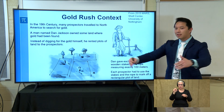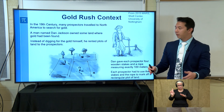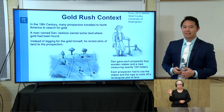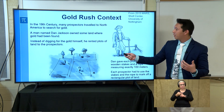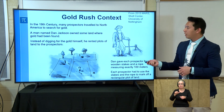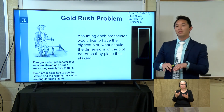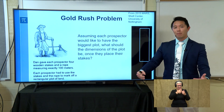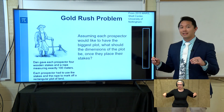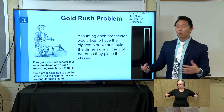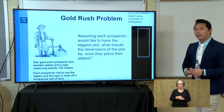Within the space each prospector marks off, they dig for gold, and Dan takes a share for renting his property — so he doesn't have to do any of the work. But the question becomes: assuming each prospector wants the biggest plot possible, how far apart do the stakes need to be to get the most land? What are the dimensions of the plot where they need to place the stakes?